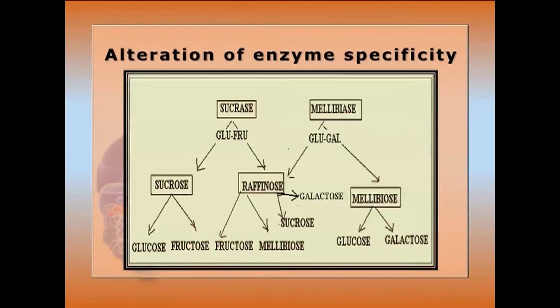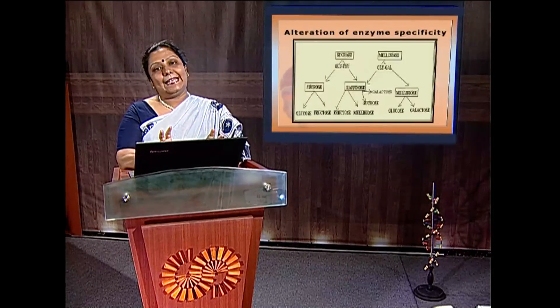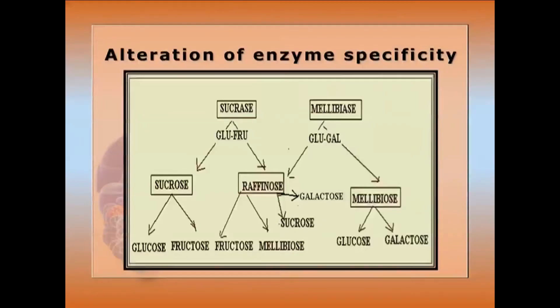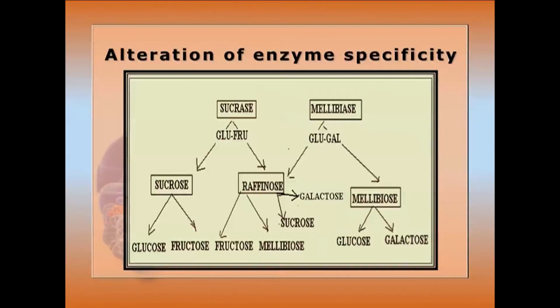Alteration of enzyme specificity: the stringent specificity of the substrate can be altered. Apoenzymes are very specific, but coenzymes are not always — both NAD⁺ and NADP⁺ can act as coenzyme for some dehydrogenases. Lactose synthase has a modulator and catalytic subunit; the modulator subunit is enhanced after birth for lactose synthesis from glucose and galactose. Sucrase acts on sucrose and raffinose to give glucose-fructose and fructose-melibiose, while melibiase acts on melibiose to give glucose and galactose.